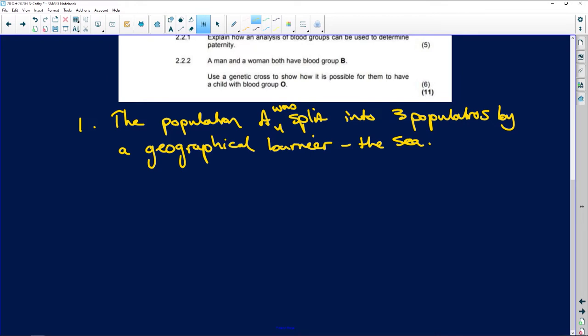Population A was split into three populations by a geographical barrier, the sea. The sea created the three islands. Next thing: the three populations cannot interbreed, therefore, there is no gene flow.